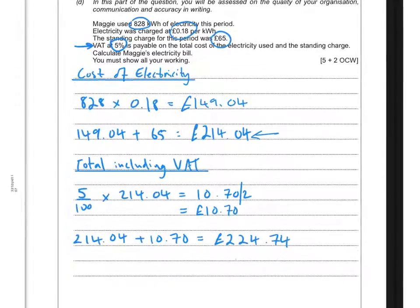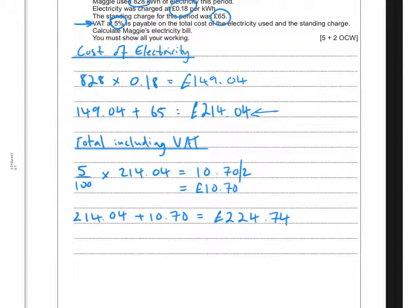So again, now you can see I've labeled all my workings. I've told them the cost of electricity is this, the total including tax is that, and just to be really sure, I can put a sentence: the total bill is £224.74.